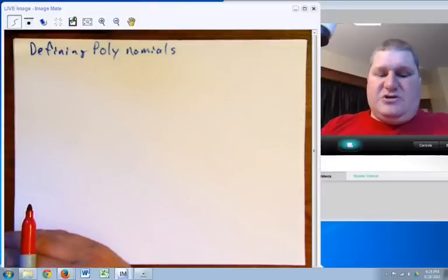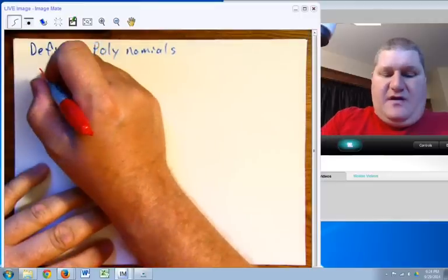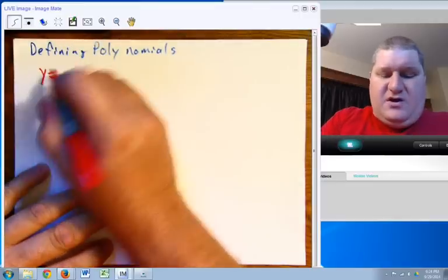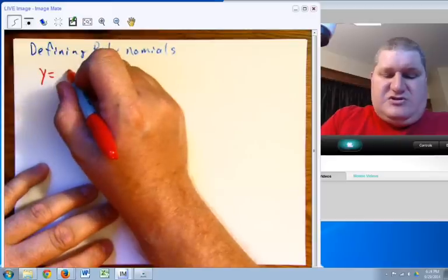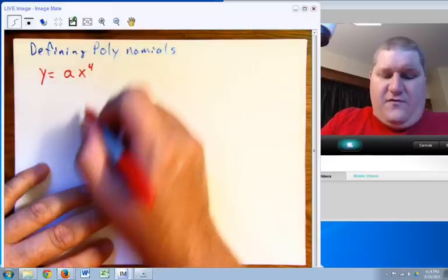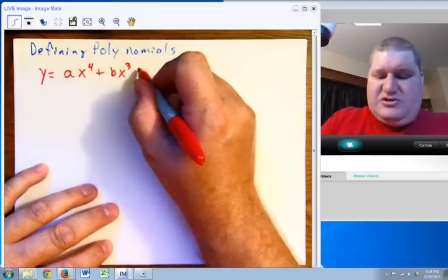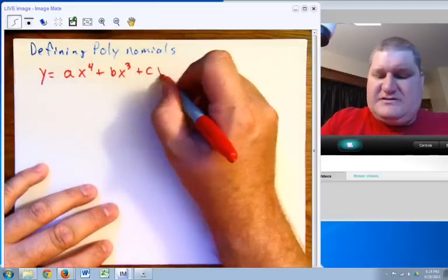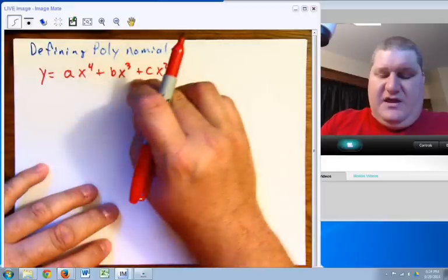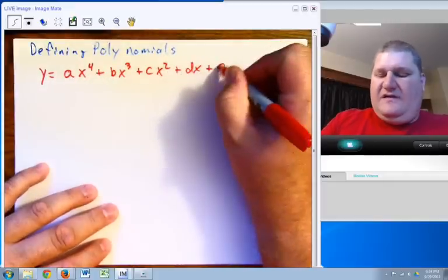Okay, ladies and gentlemen, let's talk about defining polynomials. Anytime I have a polynomial, that means I'm going to have some sort of function. Equals ax to some value, let's say 4, for example. And each of the succeeding powers is going to be a power less.